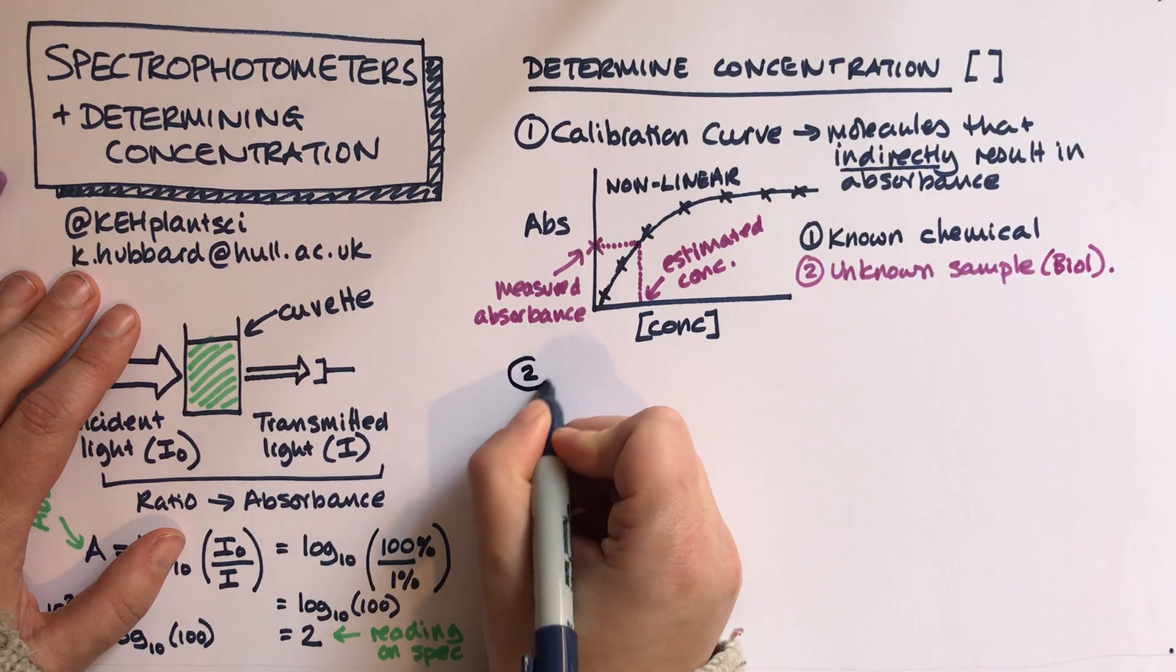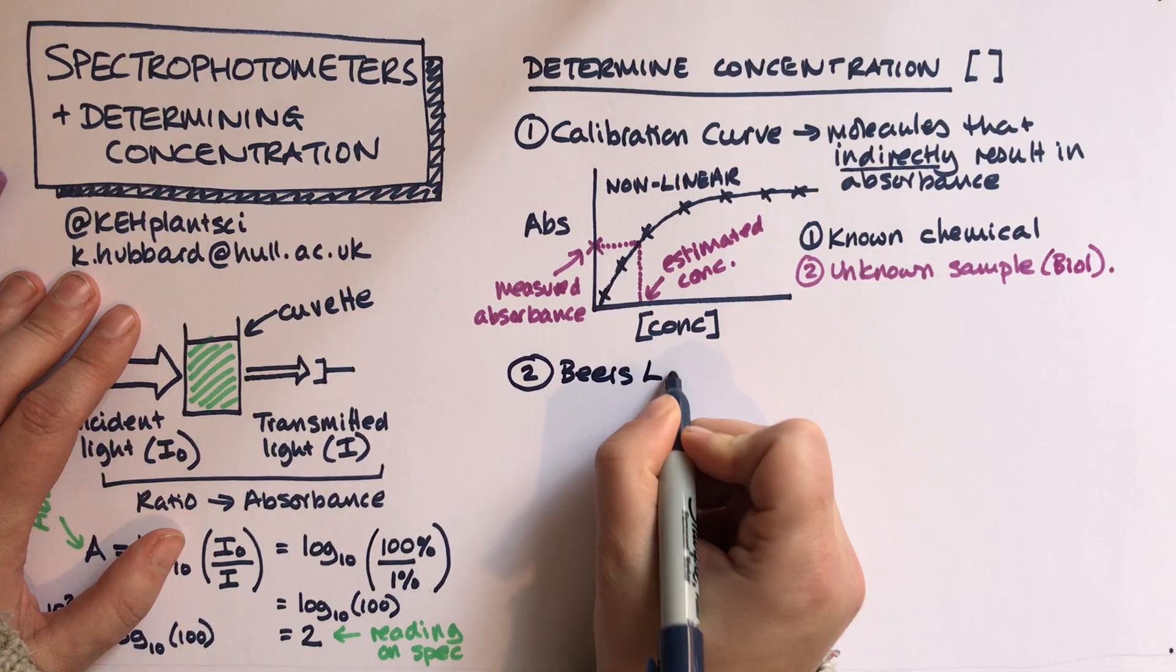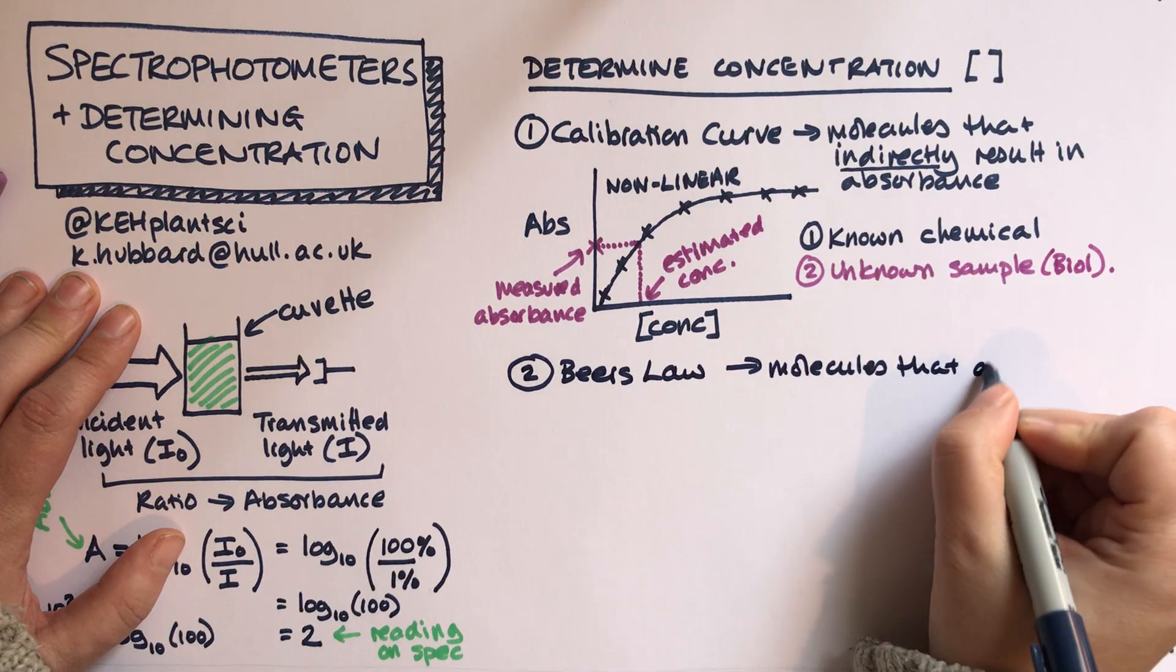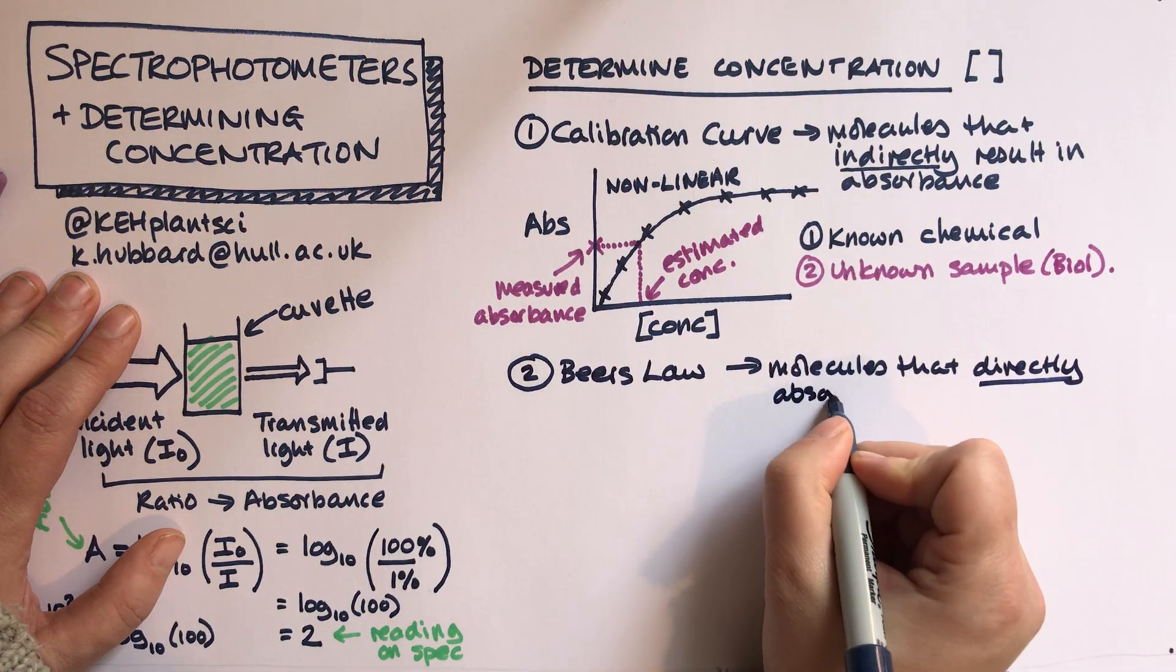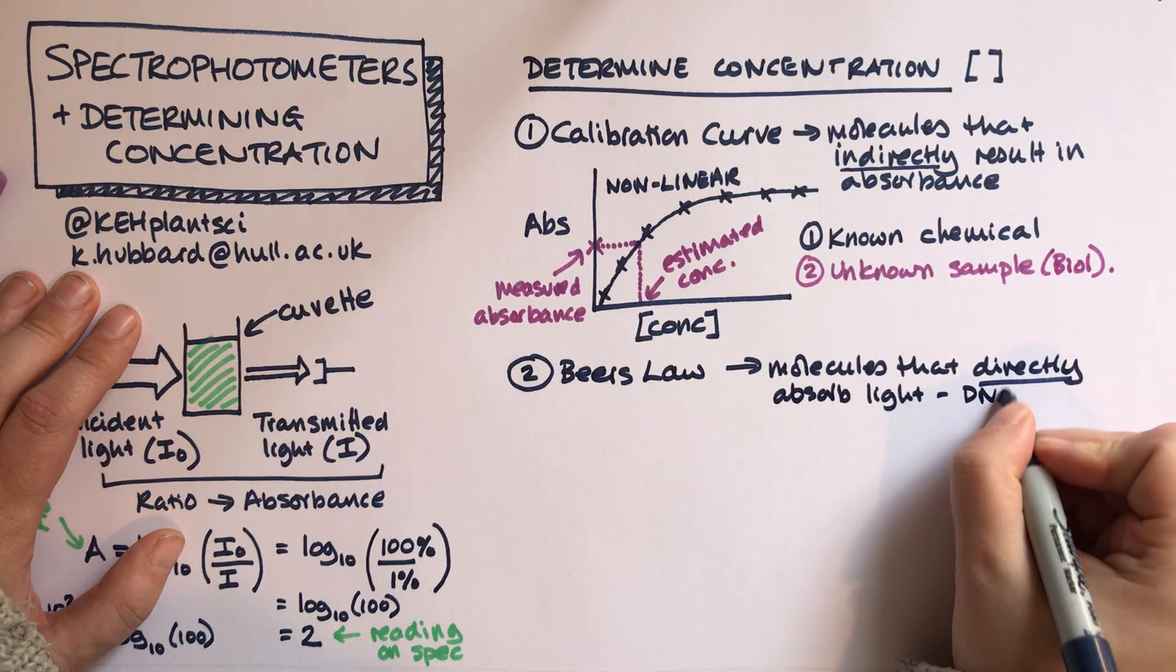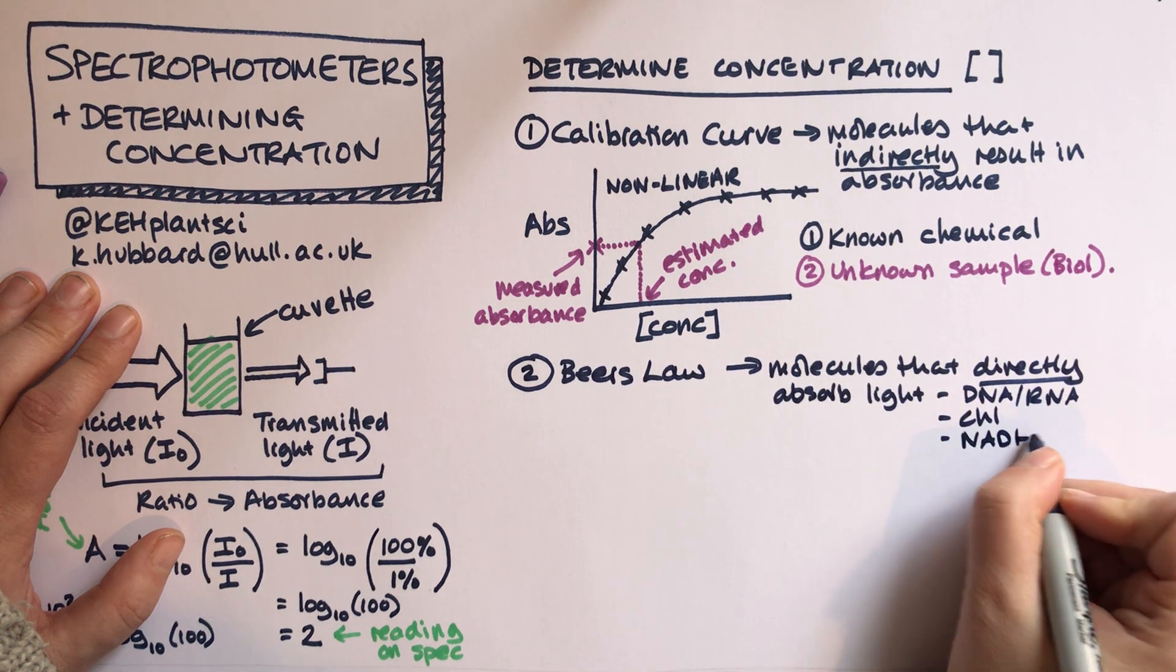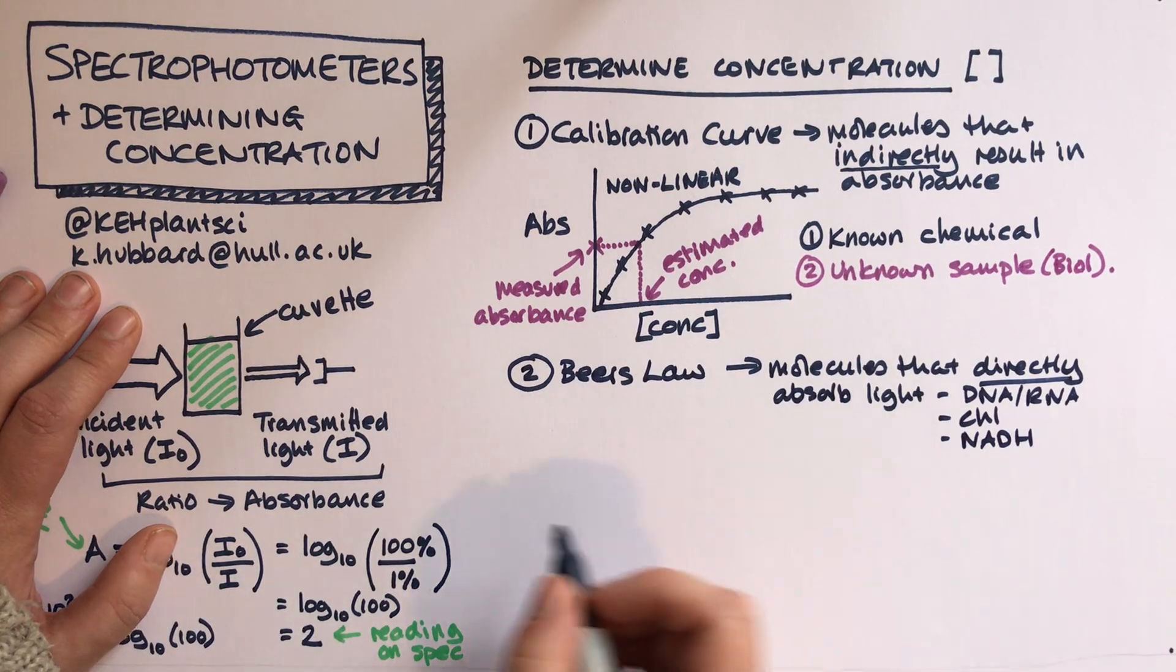The other way is to use something called Beer's law, and this is good for molecules that directly absorb light. This is useful for DNA, for RNA, it's useful for chlorophyll, it's useful for NADH which is a carrier molecule in metabolism.